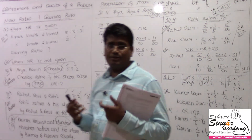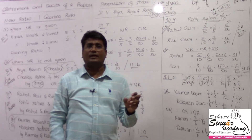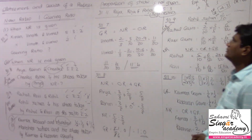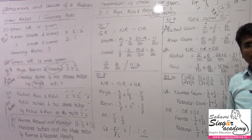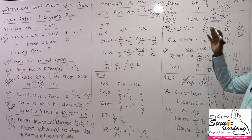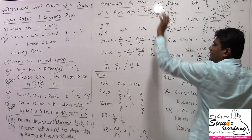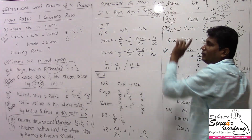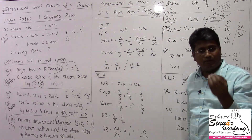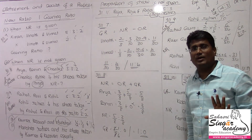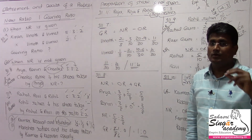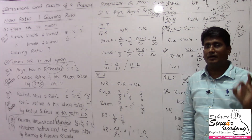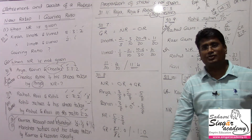When the retiring partner's share information is not given, the new ratio equals the old ratio of the continuing partners, which also equals the gaining ratio. So the new ratio is 5 is to 3 and the gaining ratio is 5 is to 3. This is the last model — a simple one. I hope you could understand all the ratio calculations covered in this class.